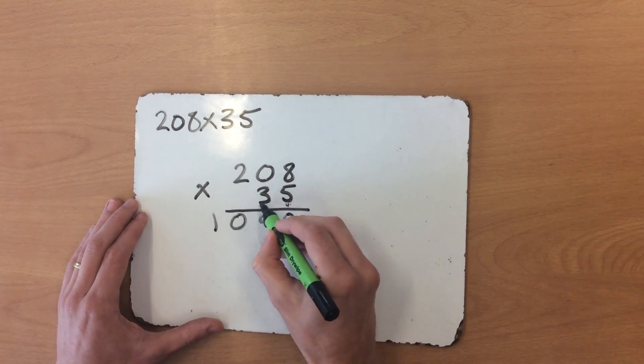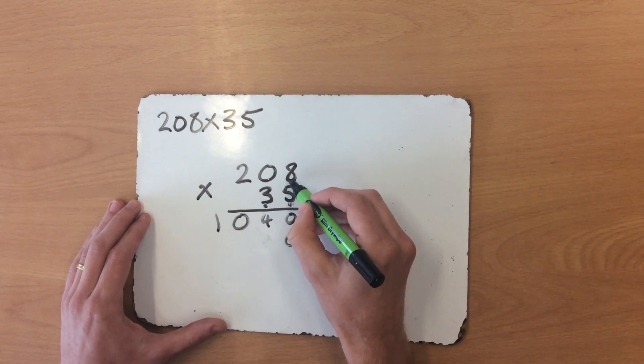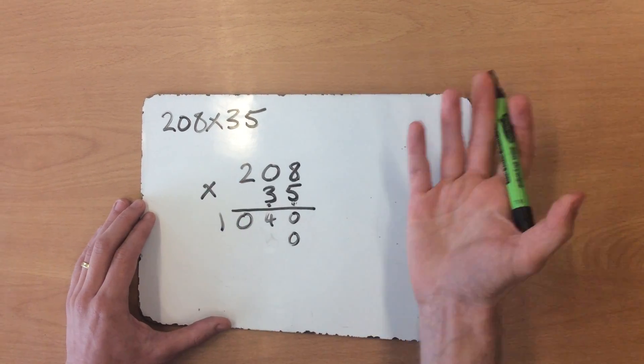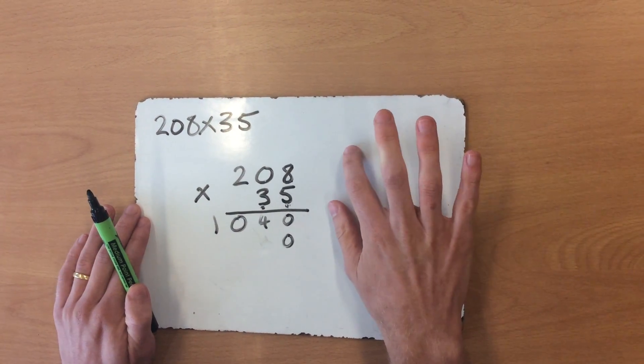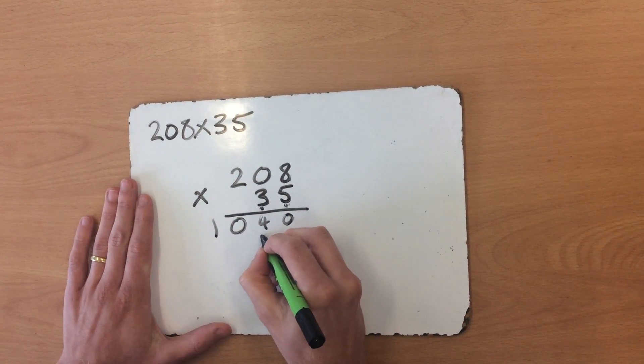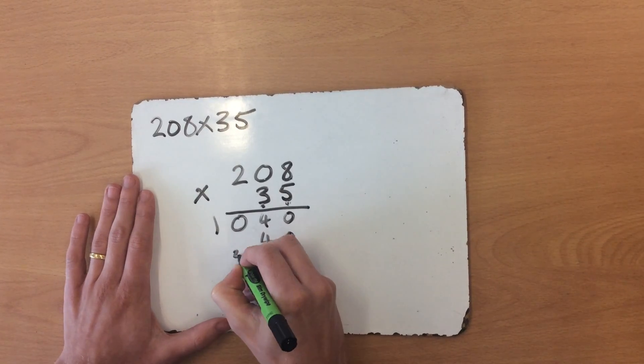So I now need to do 3 times 8. You could either do your 3 times table or your 8 times table—I think I'll do my 8 times table, so it would be a bit quicker. 8, 16, 24. I'm going to put my 4 here and carry my 2 over.